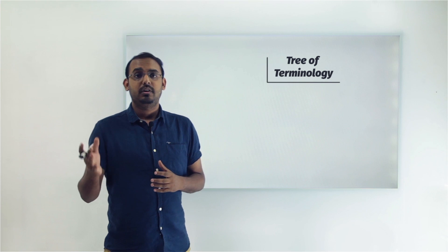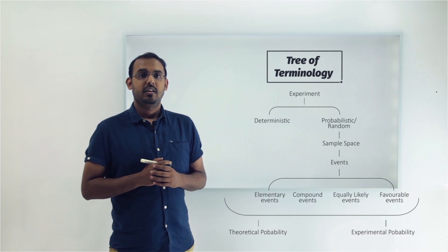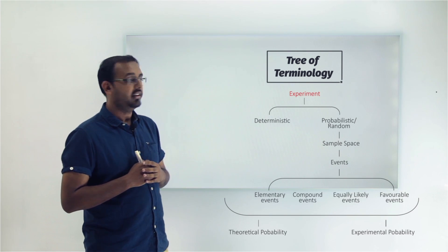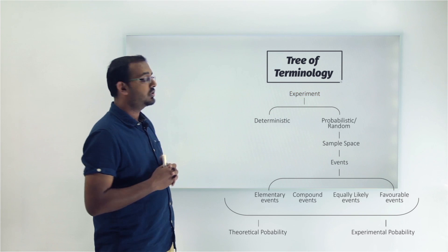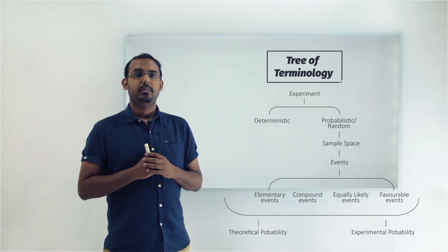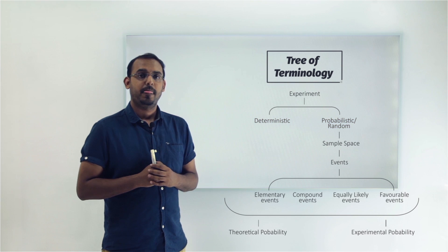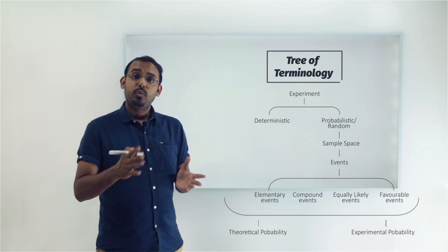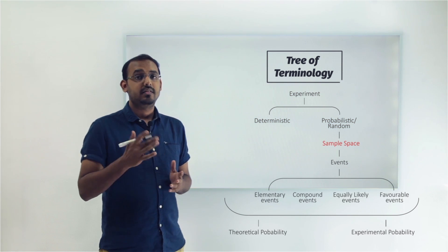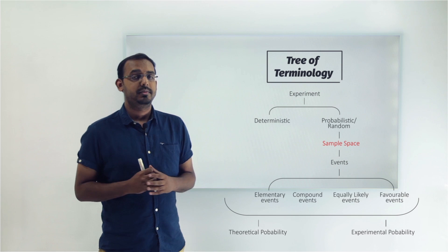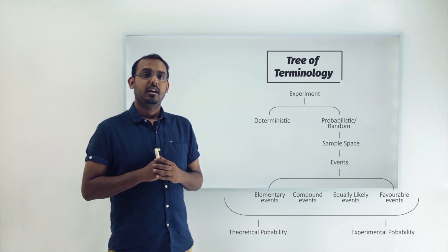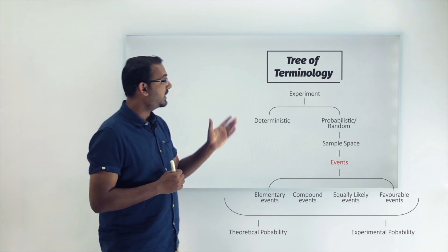Hello everyone. In the previous video we had a look at some of the terms from the tree of terminology of probability. We looked at what an experiment is, then went on to study the two different kinds of experiments — a deterministic experiment and a random experiment. Then we saw how we define a sample space associated with a random or probabilistic experiment. Now let's move on and study about events.